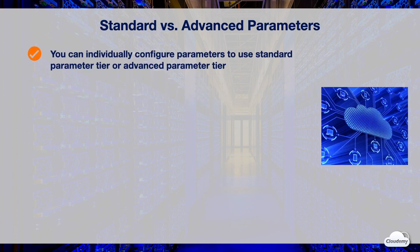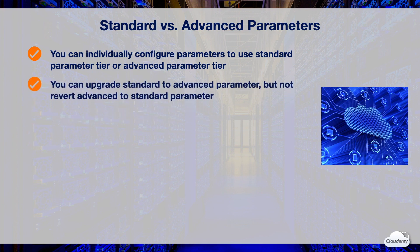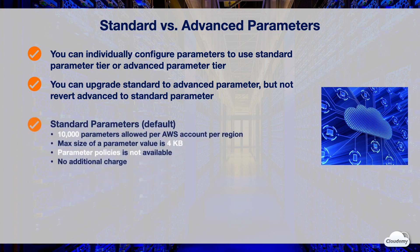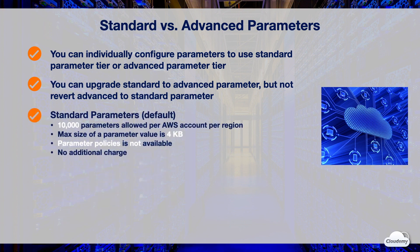Parameter Store provides options to use standard and advanced parameters. You can individually configure parameters to use either the standard parameter tier, which is the default, or the advanced parameter tier. You can upgrade a standard parameter to an advanced parameter at any time, but you cannot revert an advanced parameter back to a standard parameter. The standard parameter tier allows you to store 10,000 parameters per AWS account per region, with a maximum value size of 4 kilobytes. Parameter policies are not available for standard parameters, and standard parameters have no additional charge.